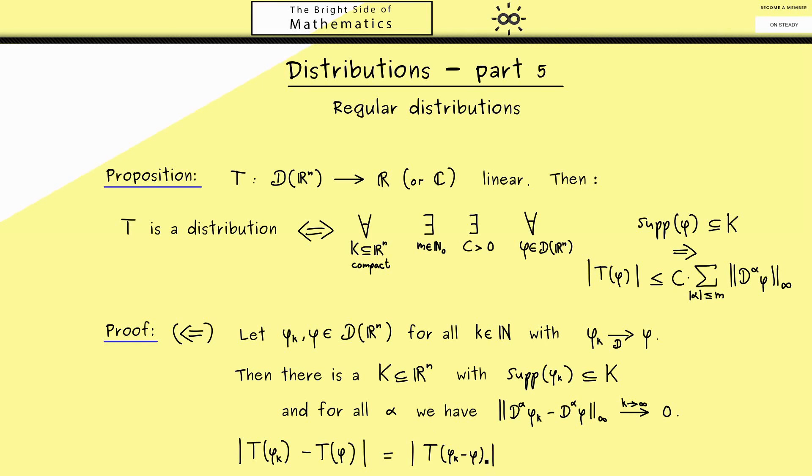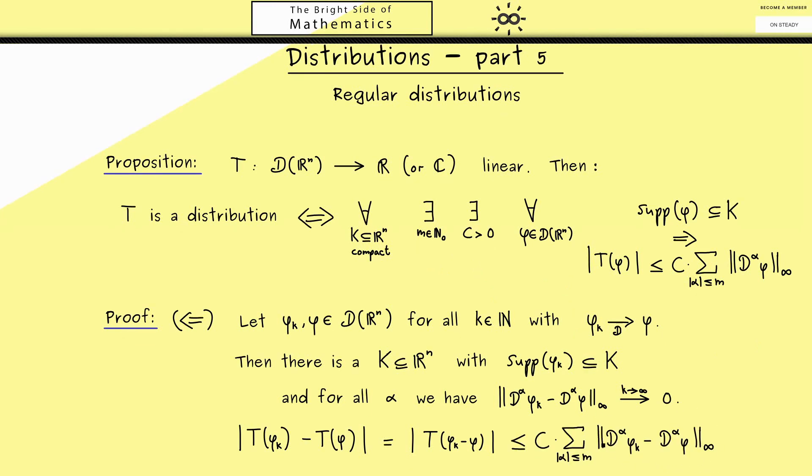By using the linearity, we can rewrite that as T of phi_k minus phi. Of course we know this is again a test function with support in k. So we know there exists an m and a c such that this estimate holds.